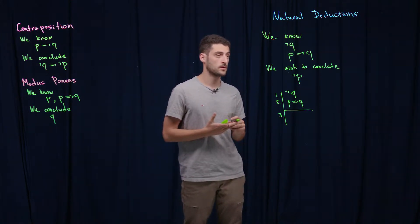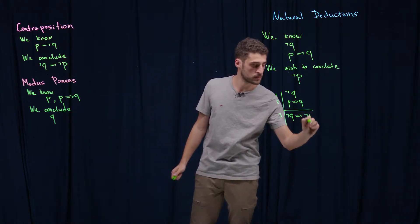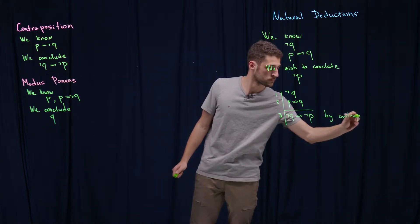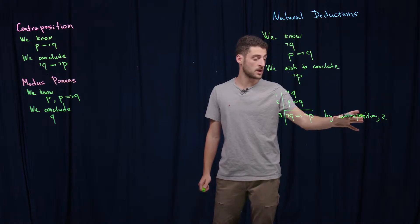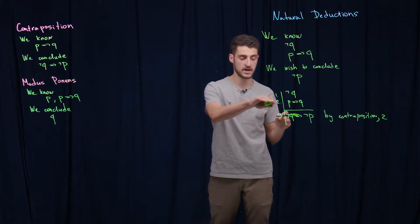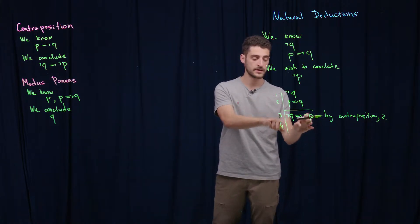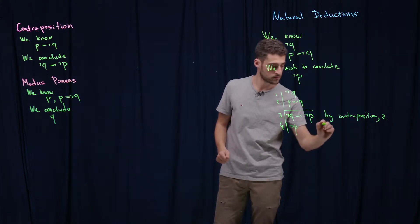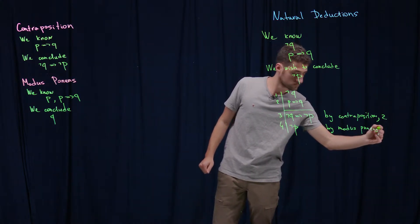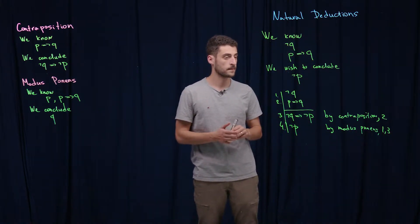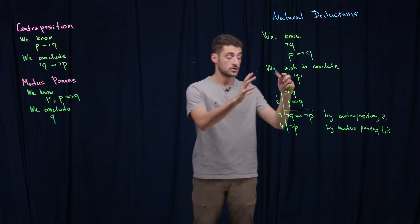The first step of the proof: we know that p implies q, so by contraposition we know that not q implies not p. We write the name of the argument and the line we use — the second line. After that, we need one more step: we also know that not q is true and we know this implication, so by modus ponens we know that not p is true. In other words, we can use these arguments or tautologies we proved before to prove another tautology.